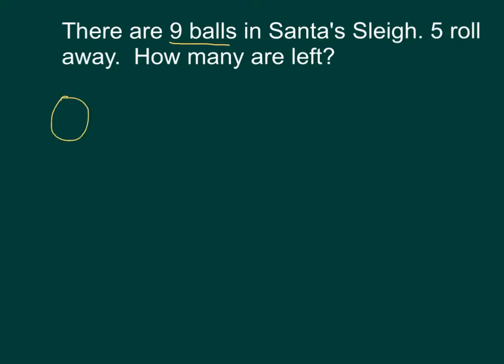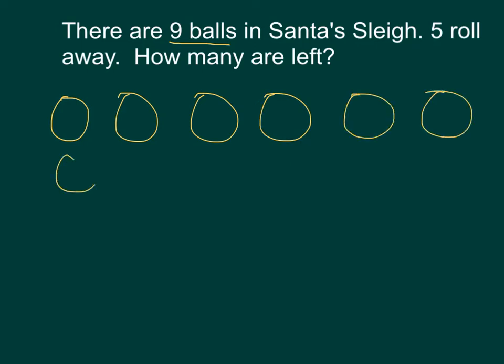One, two, three, four, five, six, seven, eight, nine. It said that five roll away. Well, if something rolls away, we don't have it anymore. So I'm going to cross out five.